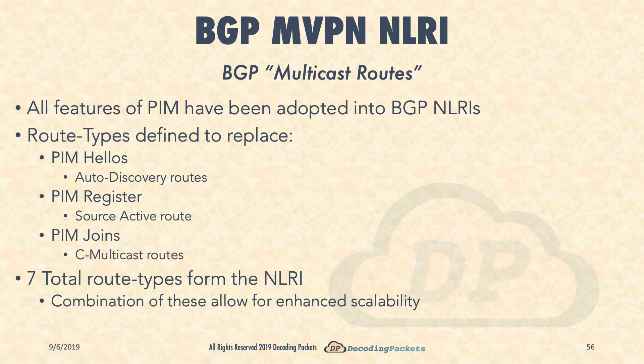The next message to consider is the PIM register message. This is being replaced in BGP via the source active route. A PE discovers a source in a customer site — it could do so via a CE, or it could be an RP that receives a PIM register message. But once the PE knows about an active source, it can alert all of the other PEs in the MVPN about that active source via the BGP source active route. Think of it sort of like MSDP — it's pretty much the same as MSDP.